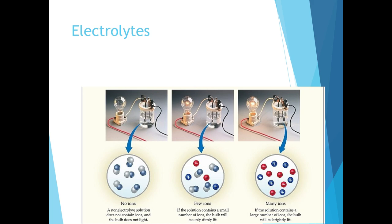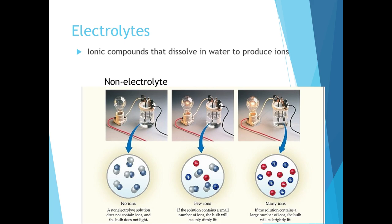As we talk about ionic and covalent compounds being dissolved in water, we can talk about properties of electrolytes. There are three different types. When an ionic compound dissolves in water to produce ions, those ions allow electricity to be conducted — this is an electrolyte solution. If a compound dissolves in water and no ions form, we call that a non-electrolyte solution — since there are no ions, electricity cannot be conducted. A weak electrolyte solution forms when an ionic compound dissolves in water but only a few actually separate into ions, allowing a small amount of electricity to be conducted. A strong electrolyte solution forms many ions when an ionic compound dissolves, allowing a large amount of electricity to be conducted.